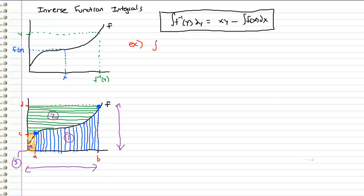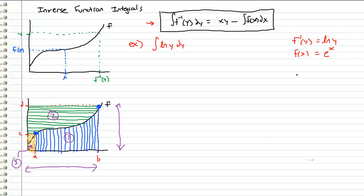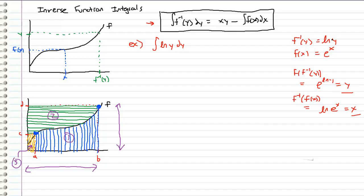Let's work through an example. Let's say we're given the integral of the natural log of y dy. Instead of using integration by parts, we're going to use this formula we just derived. So we let f inverse of y equal our integrand, which is natural log of y. We know that the natural log of y has an inverse, which is f of x equals e to the x. We can prove this: f of f inverse of y gives us e to the natural log of y, which equals just y. And f inverse of f of x gives us the natural log of e to the x, which equals just x. So e to the x is in fact the inverse of the natural log.